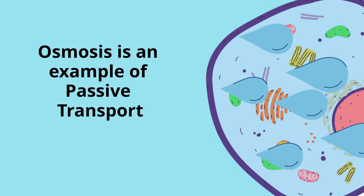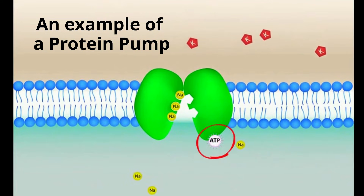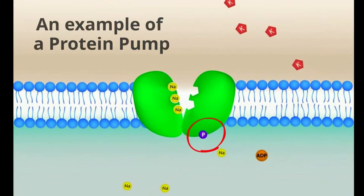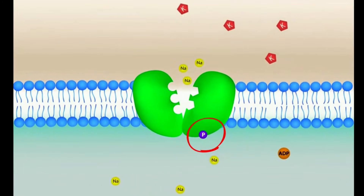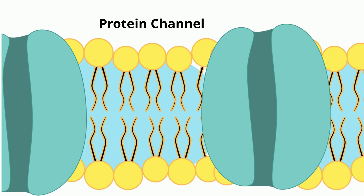In addition, the cell membrane also contains proteins that act like pumps or channels, which help move large or charged molecules across the membrane. This requires energy and are examples of active transport the cell uses to maintain homeostasis.